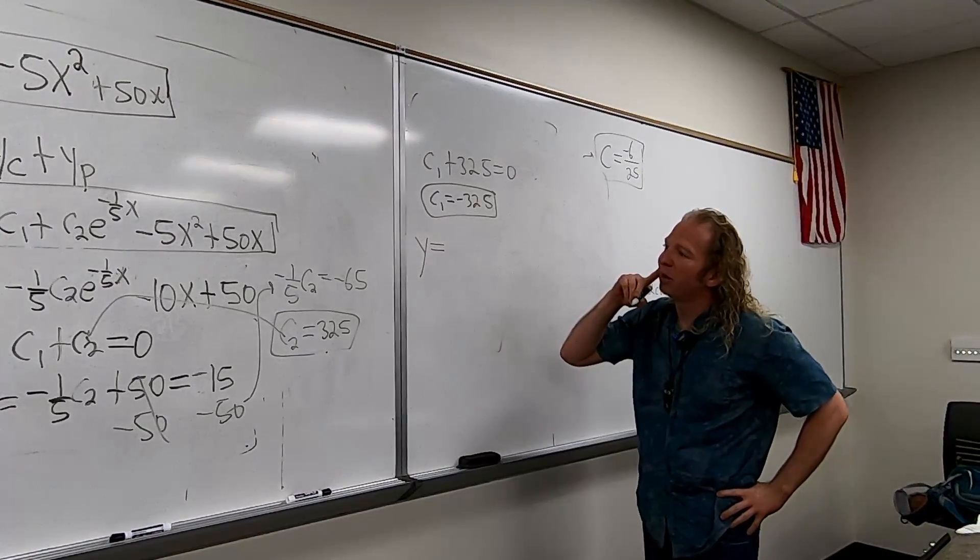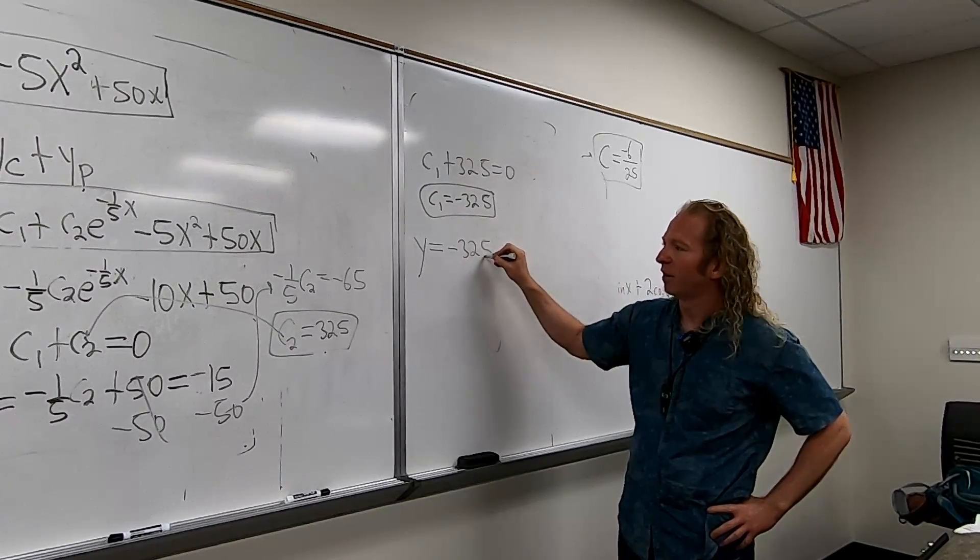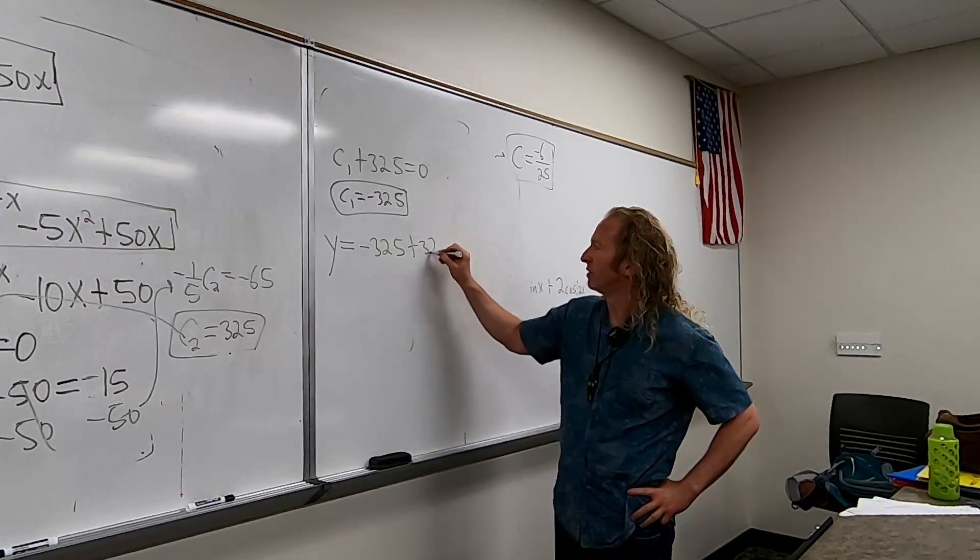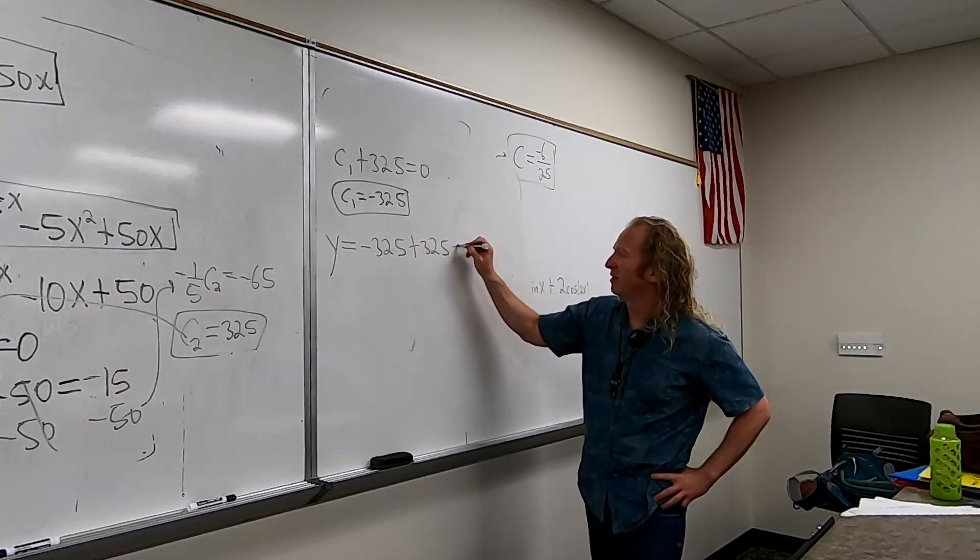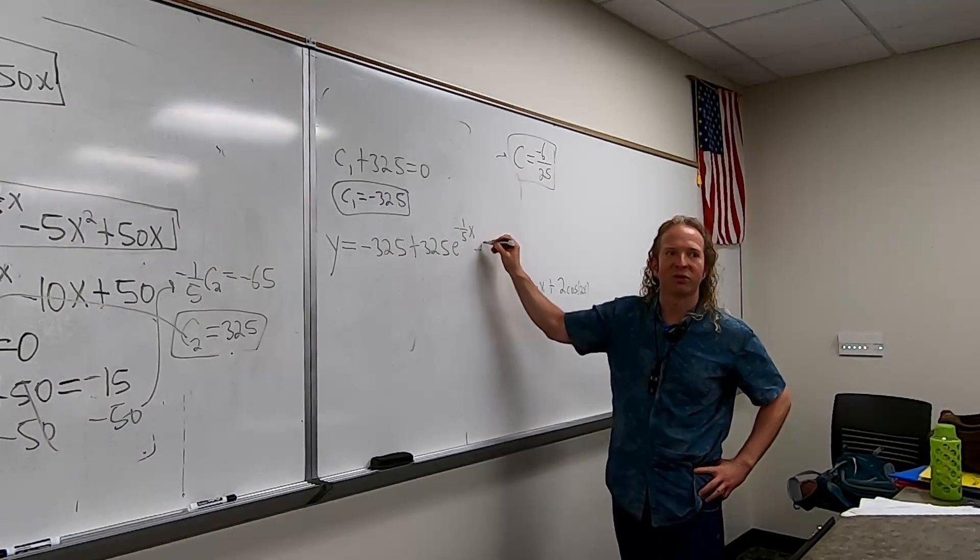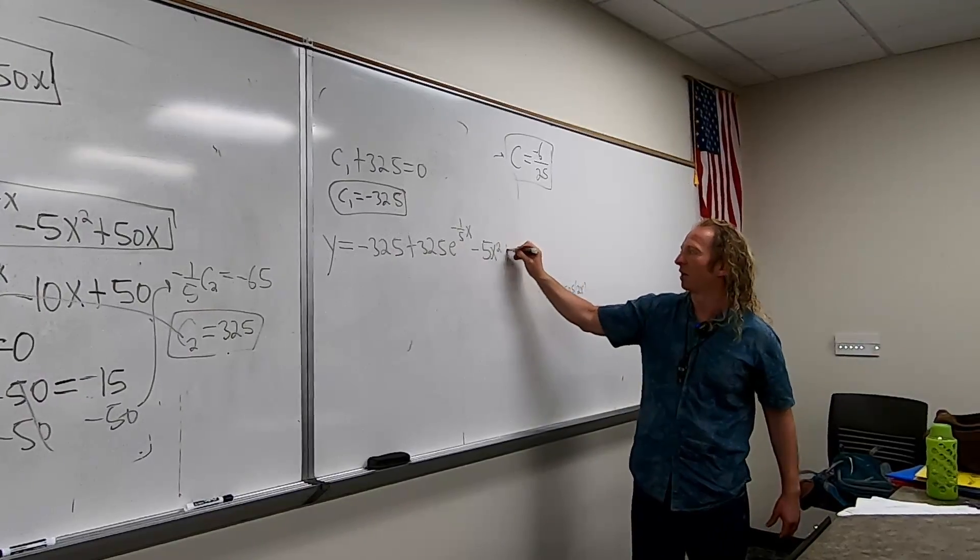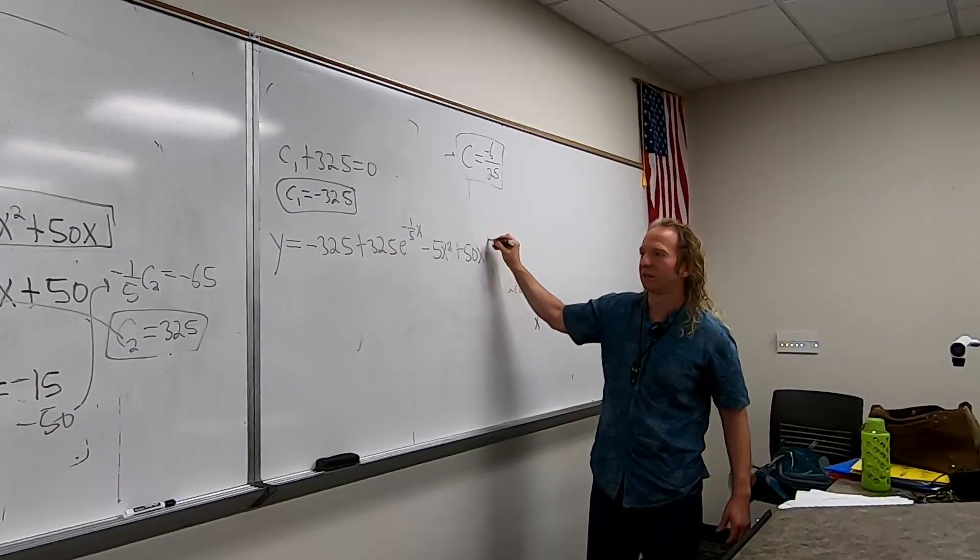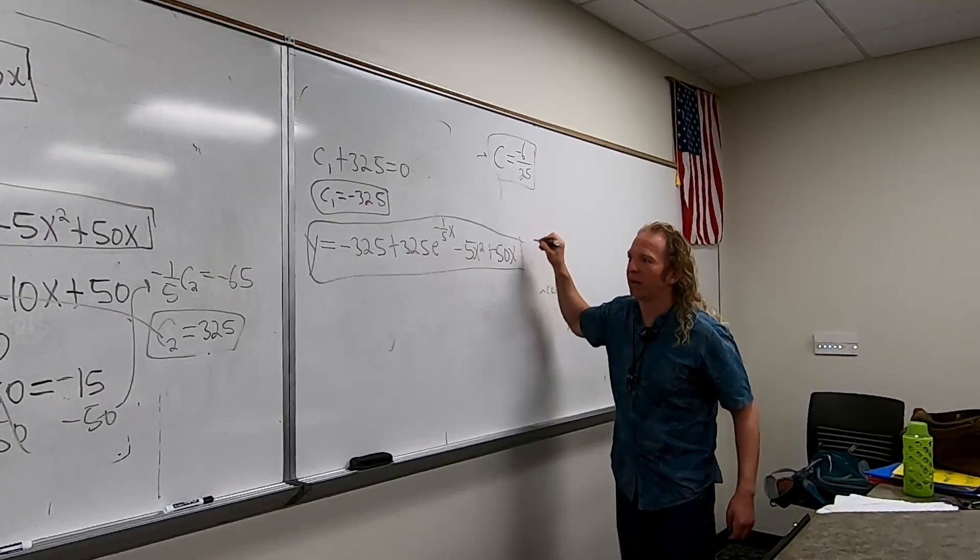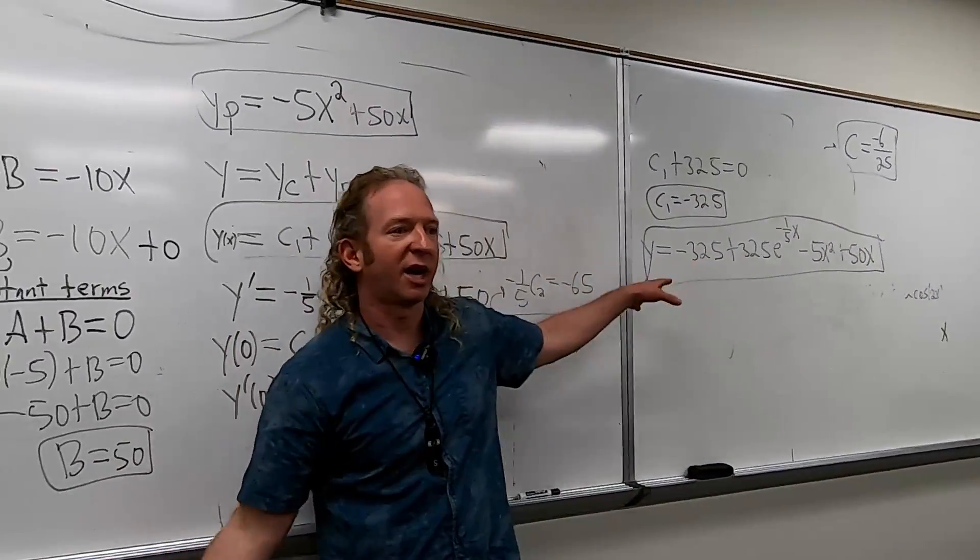So Y equals, so C1 was negative 325. C2 is 325. How weird. They're opposites. E to the negative 1 fifth X. Minus 5X squared. And then plus 50X. That looks okay, I think. So we're looking here. Plugging it in here to get that.